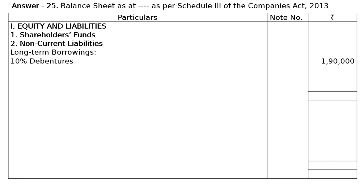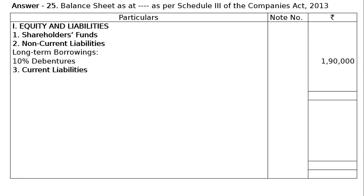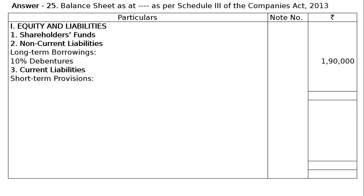Under long-term borrowings, we have 10% debentures of rupees 1,90,000. Then we have current liabilities. Under current liabilities, we will have short-term provisions, and under this we will have provision for tax of rupees 6,000.